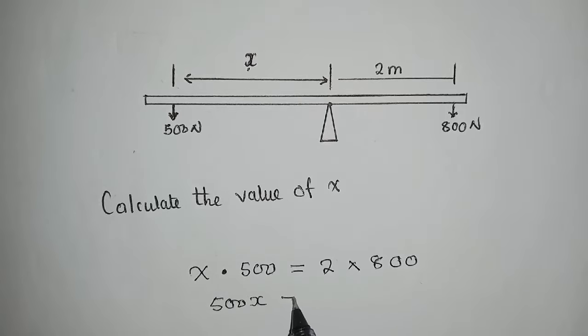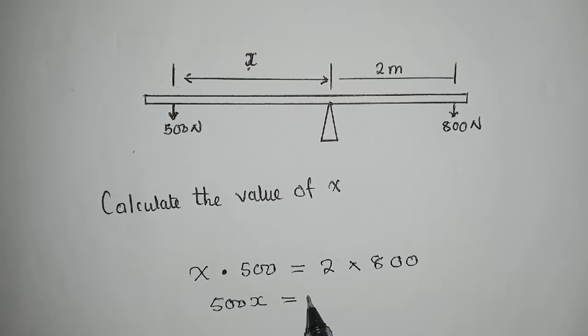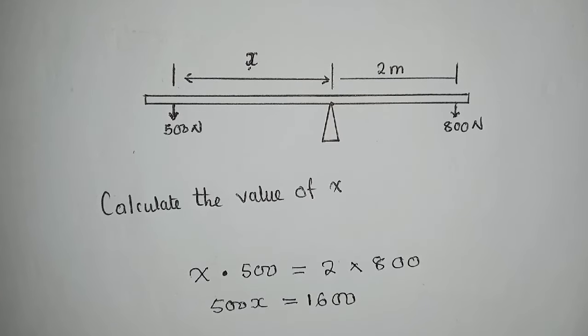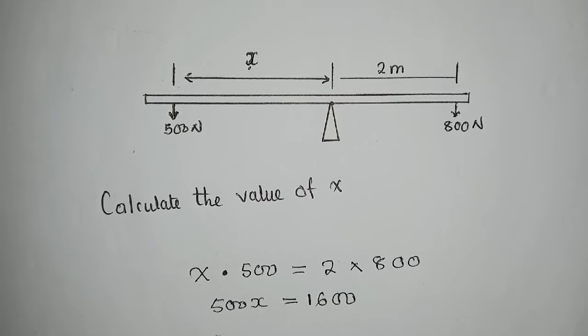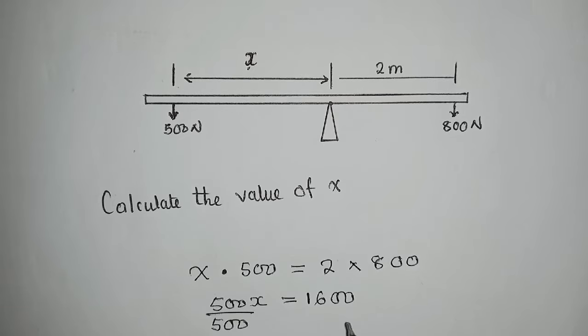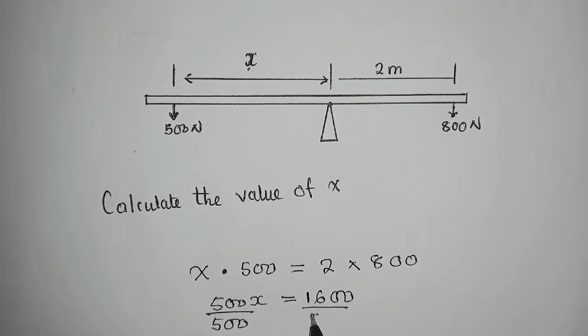500x equals 1600 on the other side. So the next move here will be to divide to solve for x. When we divide both sides by 500, we remain with x on this side.